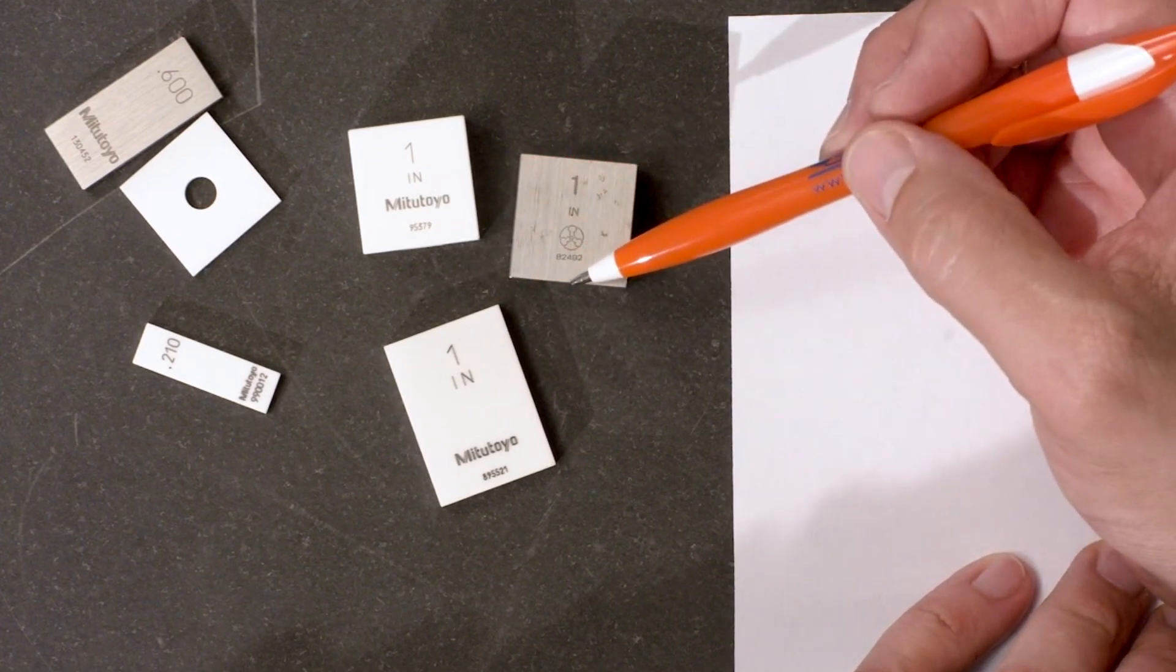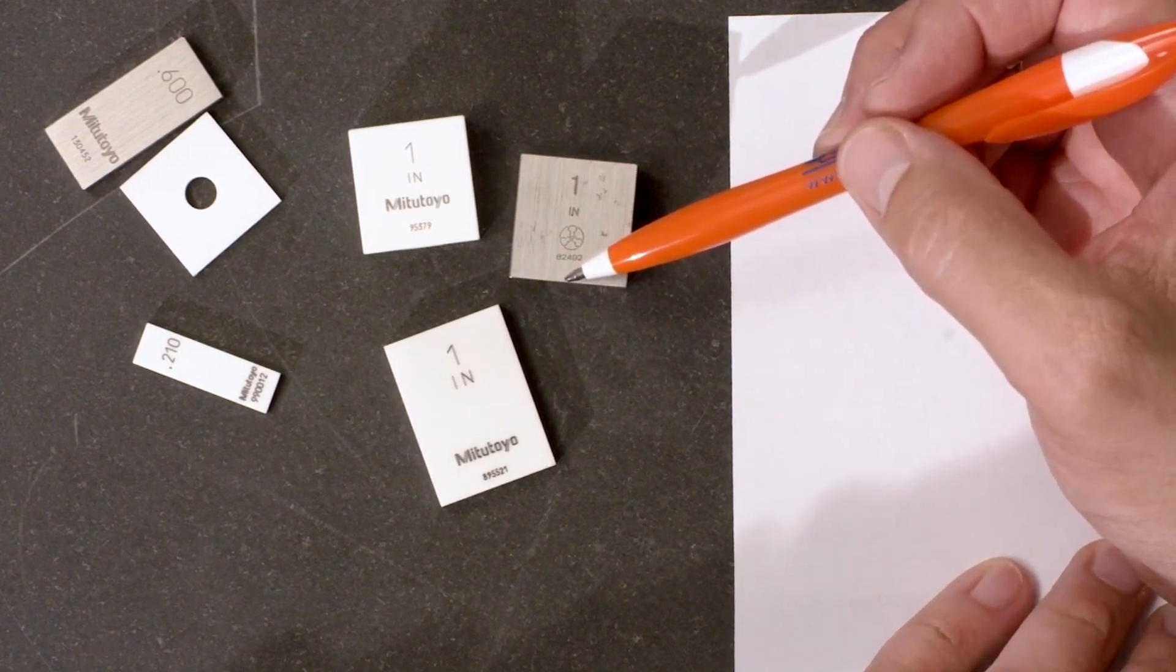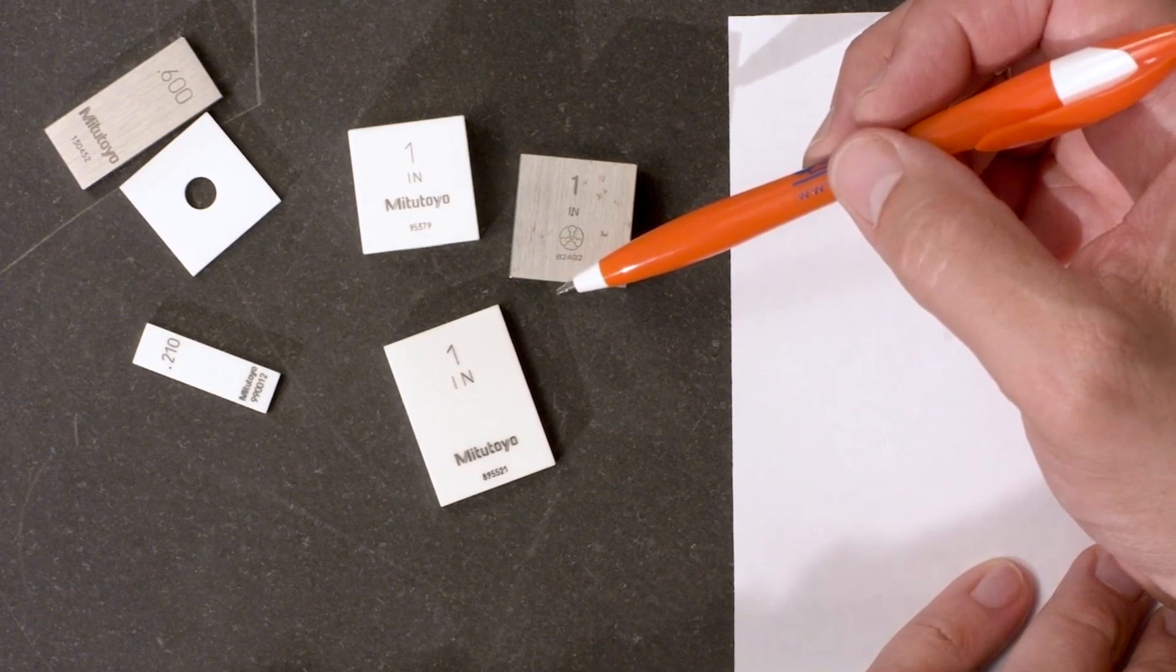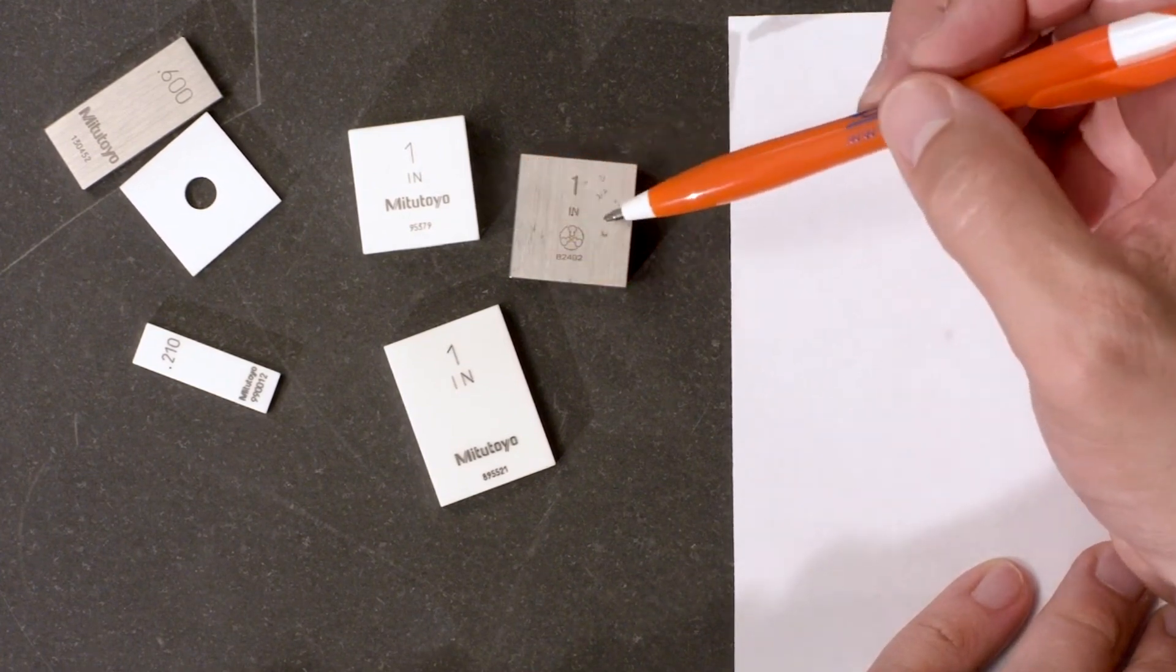For example, these three 1 inch Gauge Blocks, if they're all grade zero, according to the tolerances in the standard, it would be plus or minus 6 millionths of an inch.